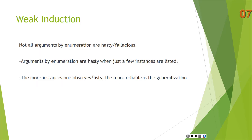Not all arguments by enumeration are hasty or fallacious. They are hasty when just a few instances are listed. The more instances one observes or lists, the more reliable the generalization, until you get a strong argument.